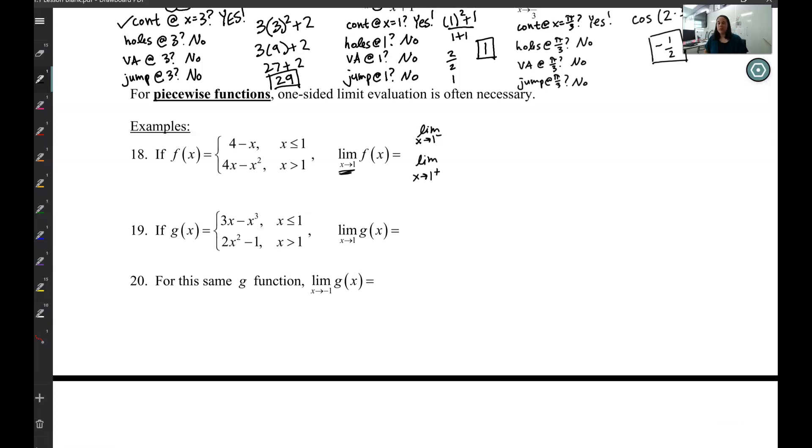Because this is a piecewise, those are two different functions. If I want to go limit as x approaches 1 from the negative side, that's going to be this first one because this is when x is less than 1. So that's going to be 4 minus x. If I want limit as x approaches 1 from the positive side, that's going to be this one as x is greater than 1, so that's going to be my 4x minus x squared.